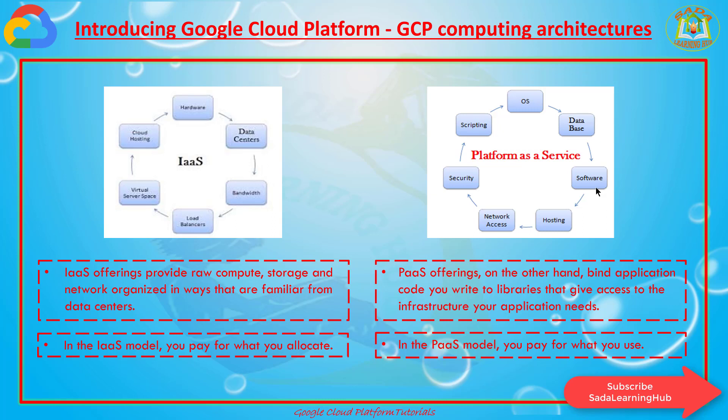Both models beat the old way where you bought everything in advance based on risky forecasting. As cloud computing has evolved, the momentum has shifted towards managed infrastructure and managed services. In the cloud, you don't need to manage everything yourself. GCP offers many services where you need not worry about resource provisioning at all — it is easy to build into your application and you pay per use.